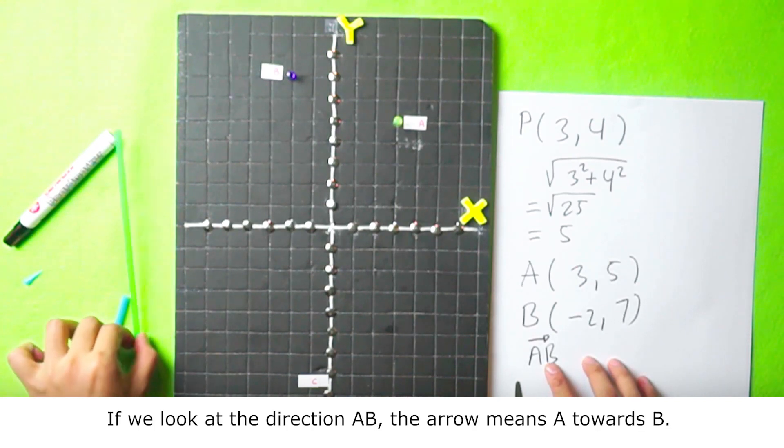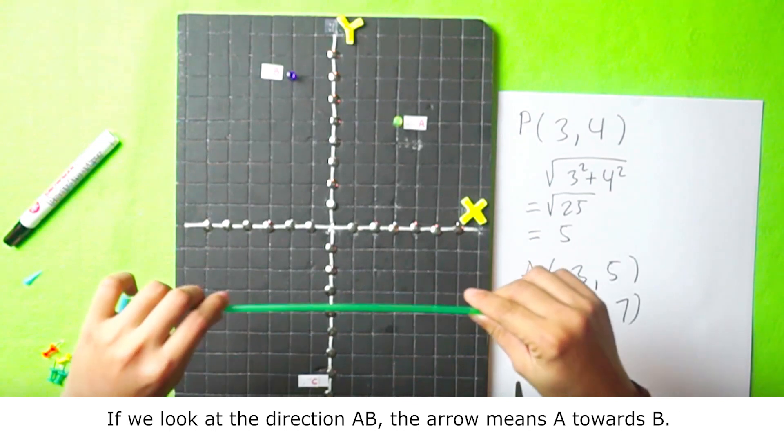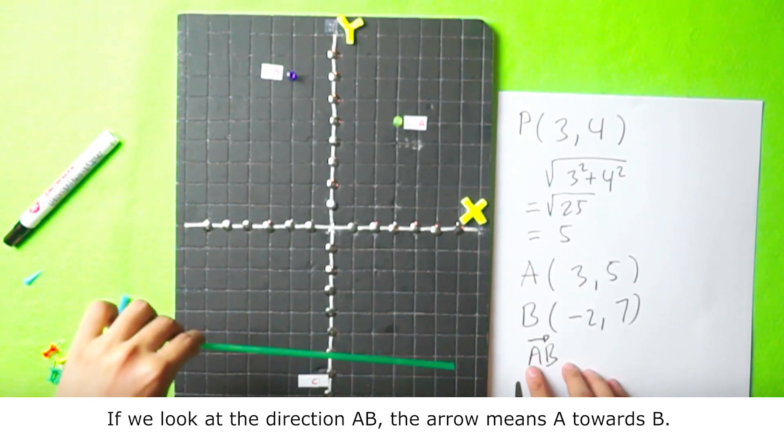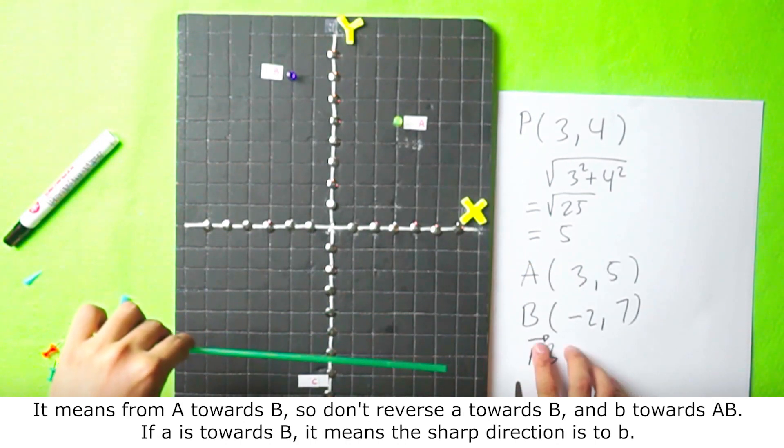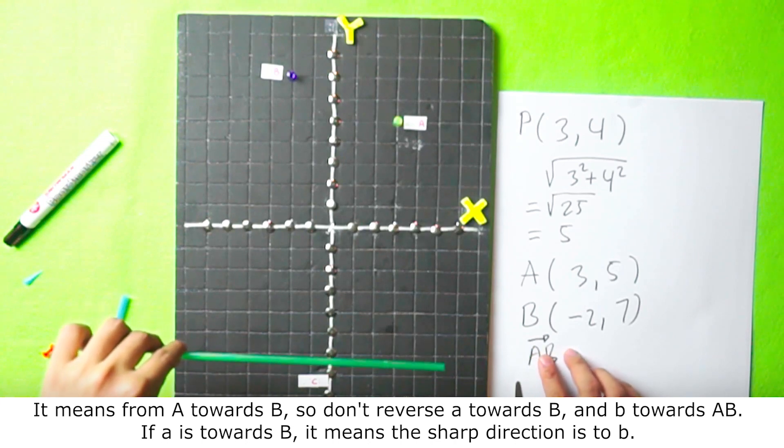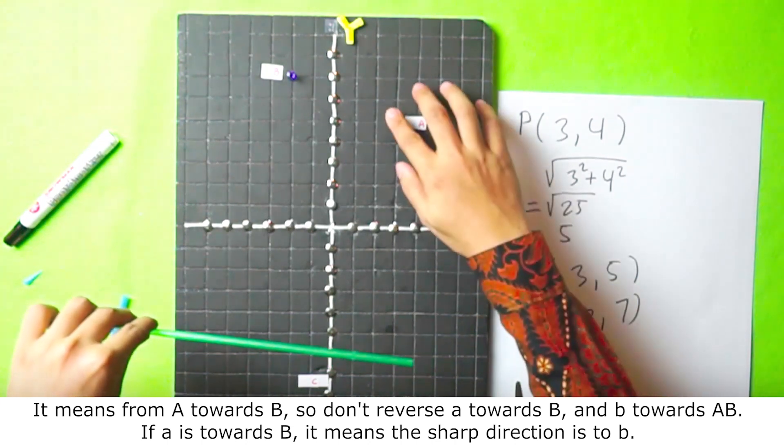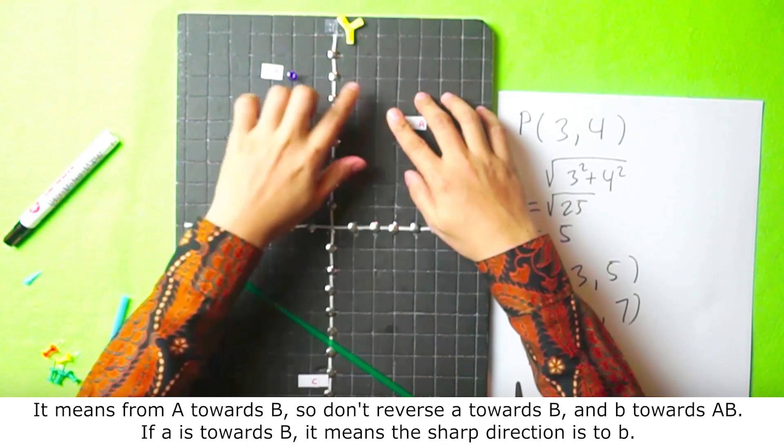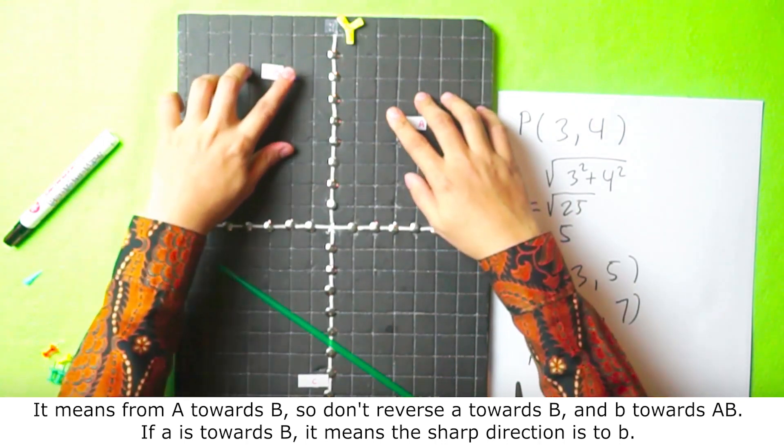If we look at the direction of AB, the arrow means A towards B. It means from A towards B. So don't reverse it, B towards A. If A is towards B, it means the sharp direction is to B.